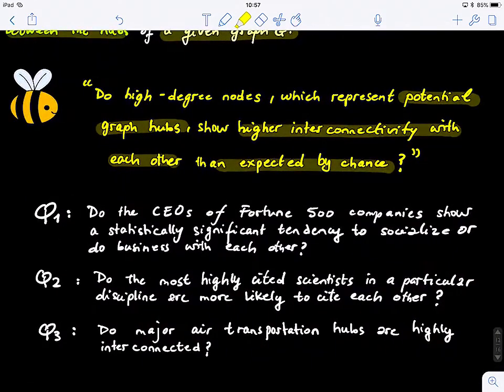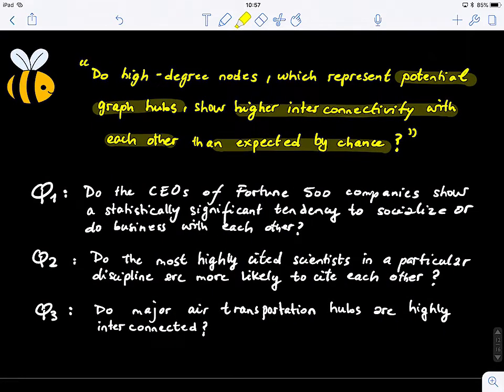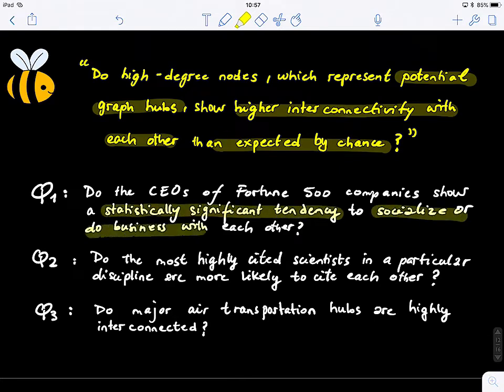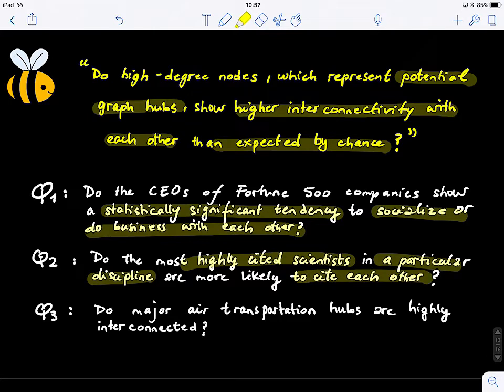For example, what does this mean? It means, for example, do the CEOs of Fortune 500 companies show a statistically significant tendency to socialize or do business with each other? So these are the hubs, right, the business hubs. The other question: do the most highly cited scientists in a particular discipline are more likely to cite each other? It's another question, right. Now, do major air transportation hubs are highly interconnected? You can see now how we can look at a very abstract simple generic question, projected to different problems to solve, right.